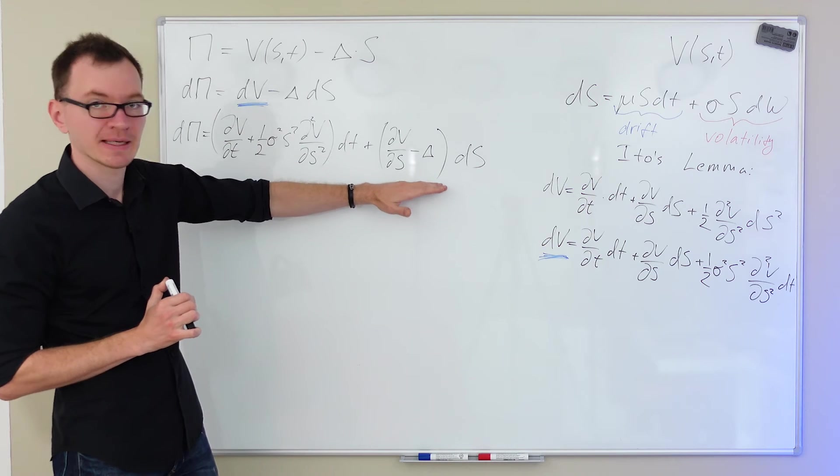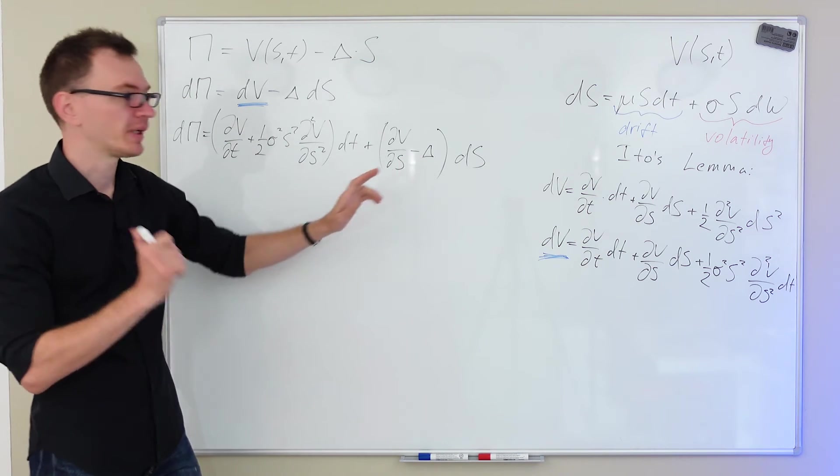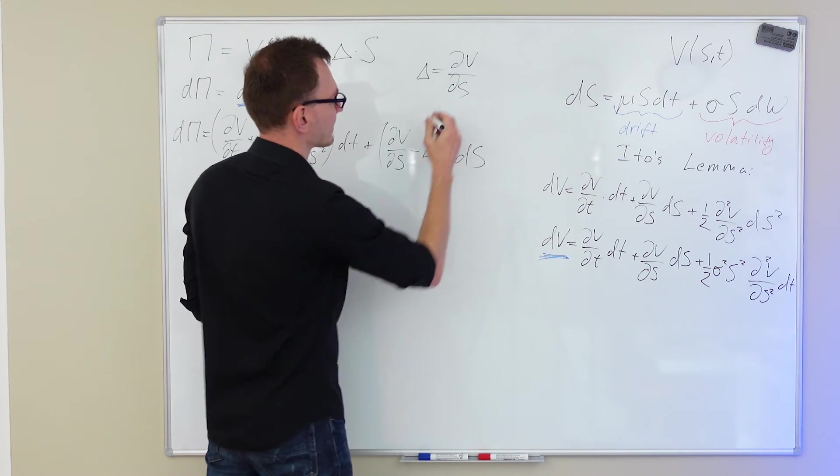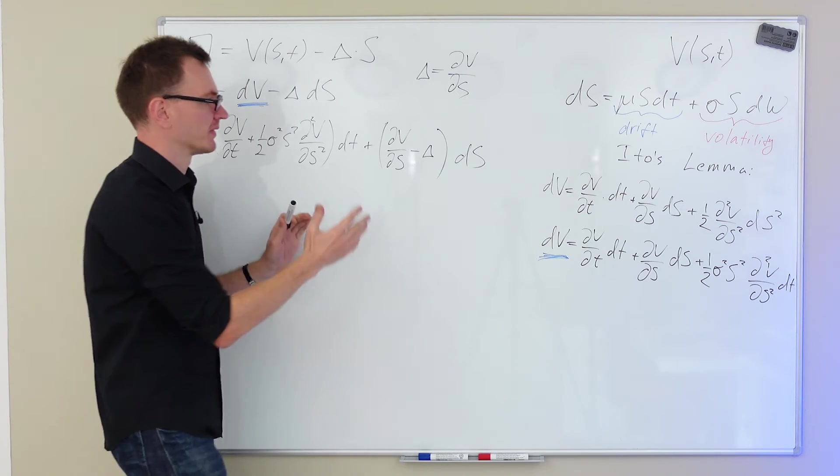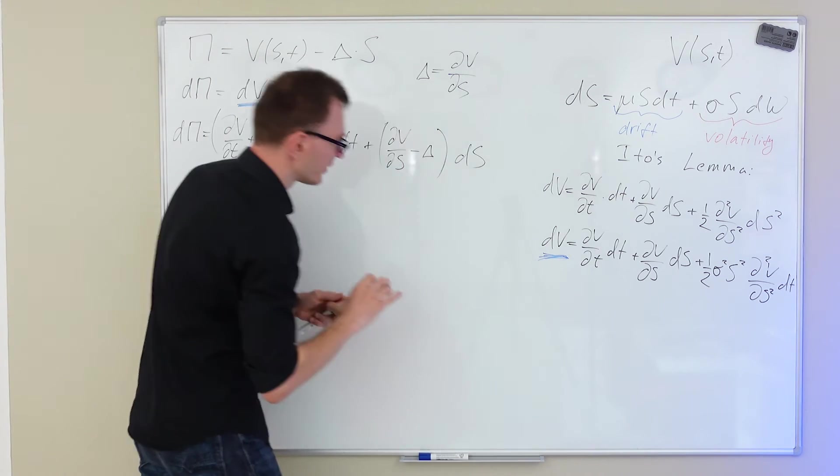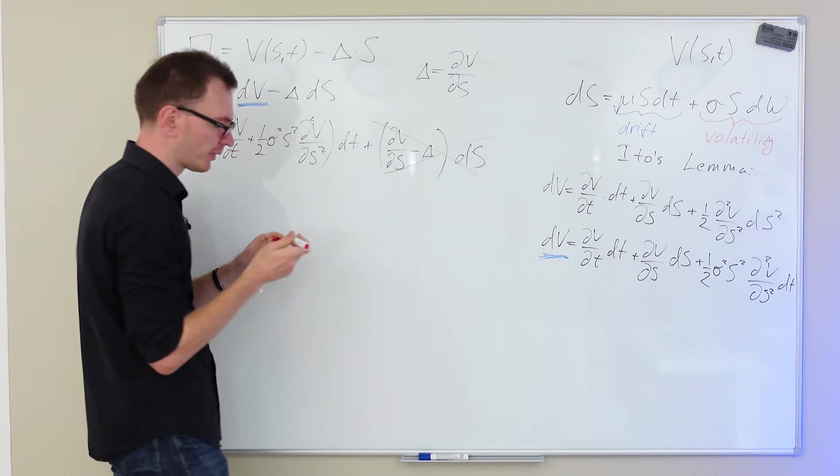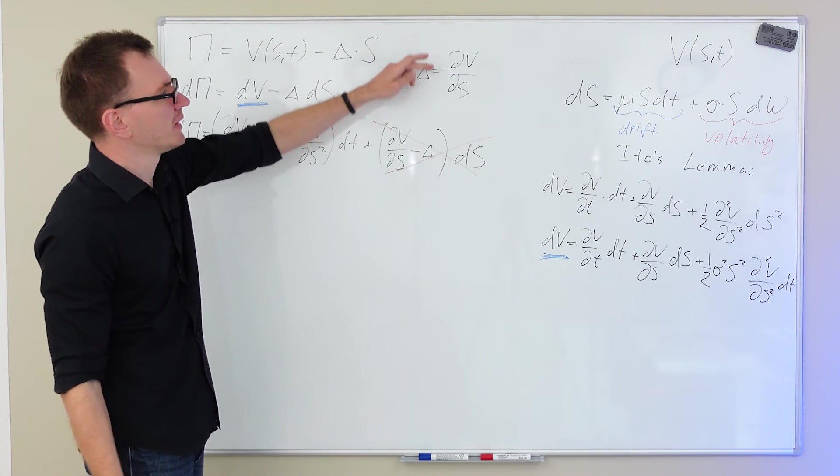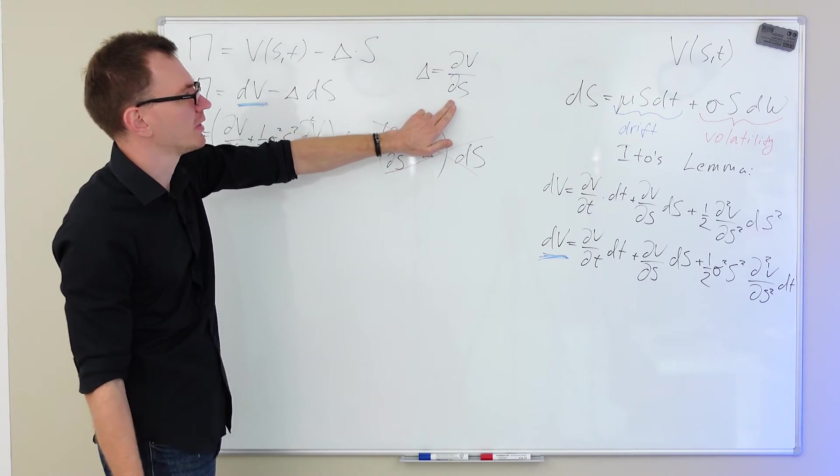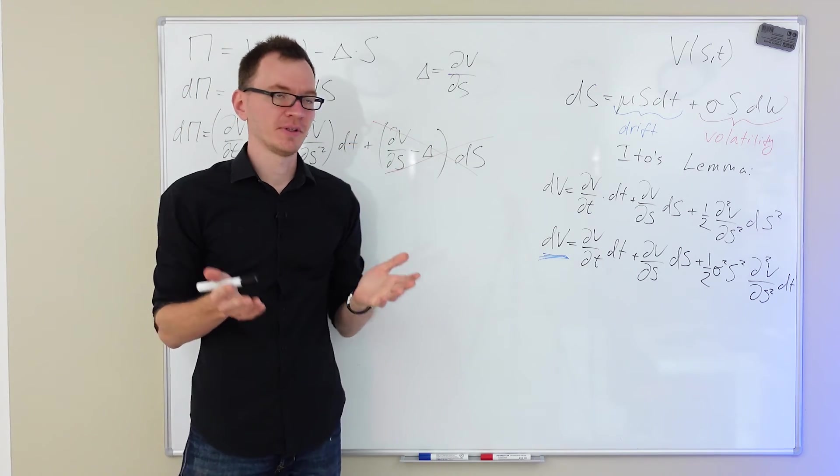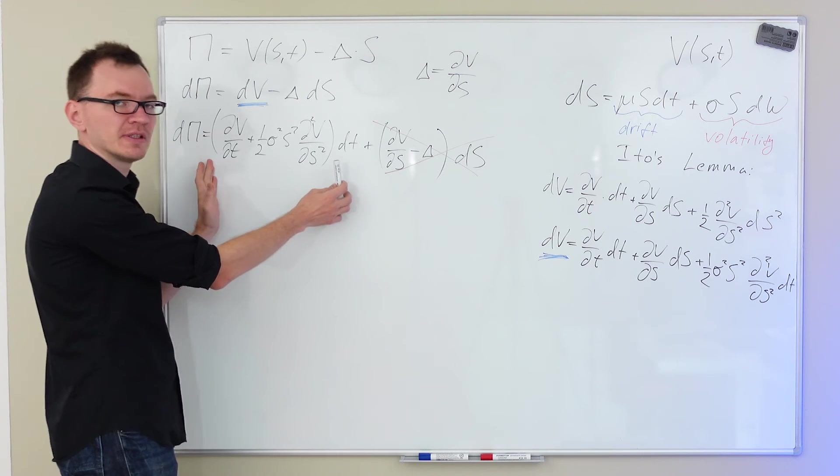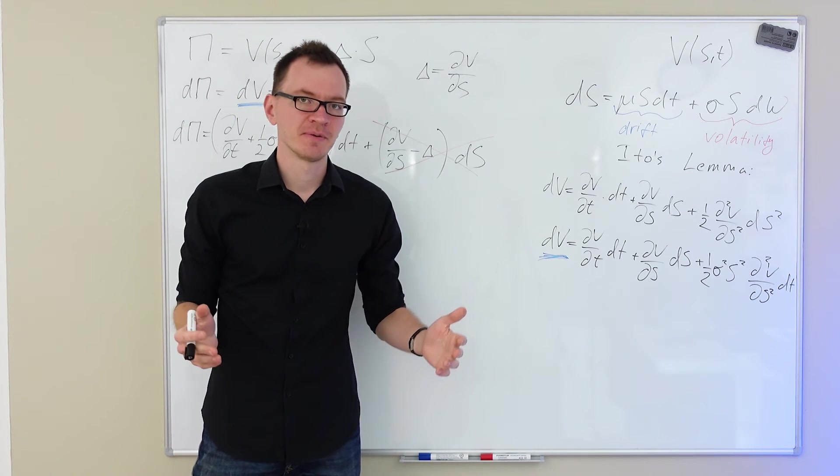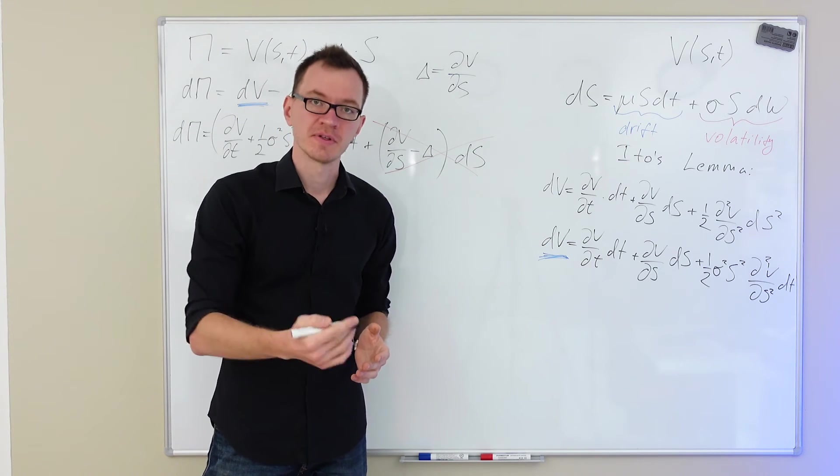But you'll note something quite interesting about the dS term. In here, we have the delta. And what we can do is, we can actually set the delta to dV/dS. And if we do that, a little bit of magic happens. This term cancels out and becomes zero. So, that means that we have completely eliminated the risk in our portfolio, simply by choosing delta as dV/dS. And you will also recognize that delta is simply the change in the value of an option per unit change in the underlying price, which is a common definition of a delta. And if we do that, our portfolio is just a dT term, which means that the portfolio is now deterministic, and as such it doesn't carry any risk.